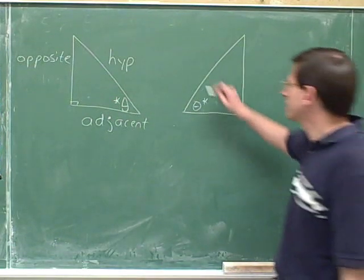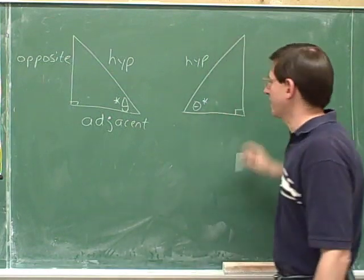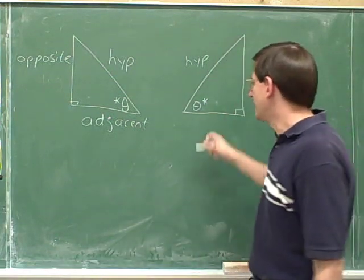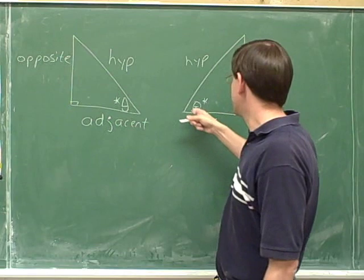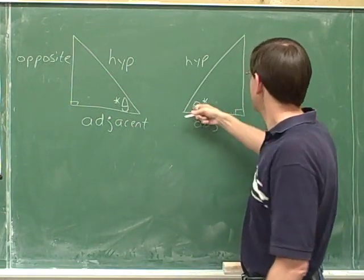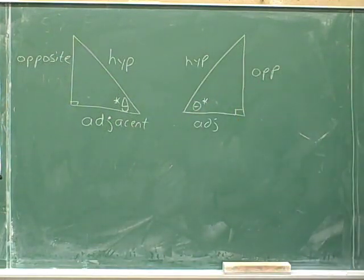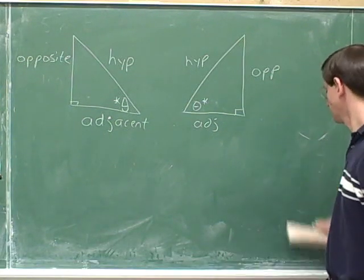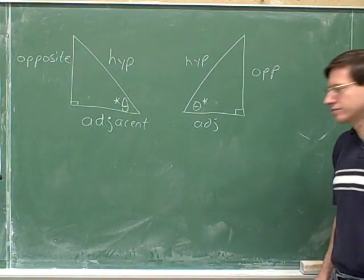The hypotenuse is opposite to the right angle. This horizontal side is adjacent to theta, and this vertical side is opposite to theta. So those are our answers.